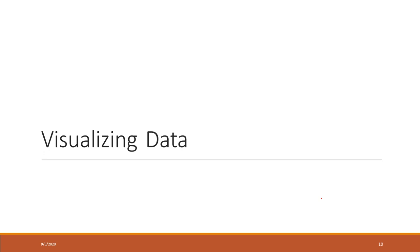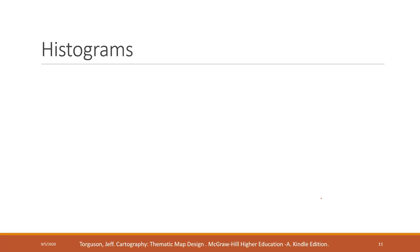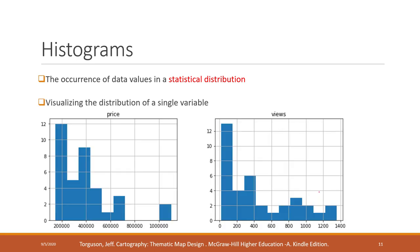The first one we use a lot is called histograms. A histogram shows the frequency of occurrence of data in a statistical distribution, and it's used a lot to show the distribution of a single variable. For example, here we have a price distribution and also a views distribution, so we need two histograms to show those two variables. On the x-axis are the range of values, and on the y-axis are the number of records — the counts that fall in those ranges.